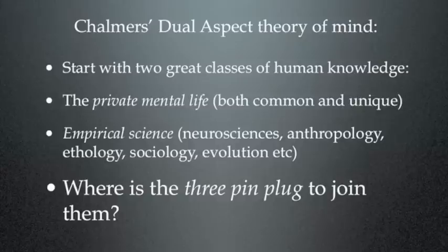We start with the two great classes of human knowledge. We've got the private mental life, which is both common and unique, and we've got the empirical sciences, meaning the neurosciences, anthropology, sociology, evolution, etc. And what we want is a three-pin plug to join them. We need to be able to link these two together, that is to say, to resolve the mind-brain problem.